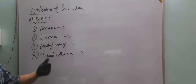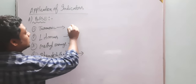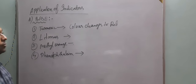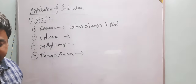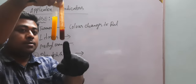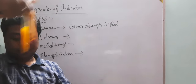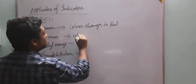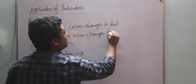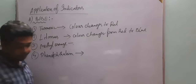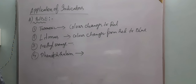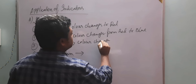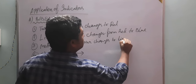Now for base: as seen in the experiment, the turmeric solution color changes to red when base is added. This test tube was mixed with base and the other with acid. Next, litmus — its color changes from red to blue when base is added. Methyl orange color changes to light yellow when base is added.